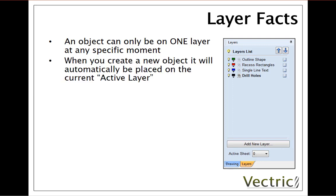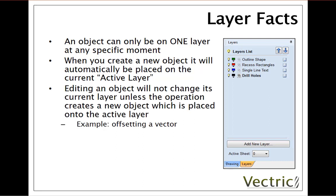When you create a new object it will automatically be placed on the current active layer. And when editing an object it will not change its layer unless the operation creates a new object which is placed onto the active layer. For instance if we have an object selected on a non-active layer and decide to offset that vector, thereby creating a new copy, that new copy will be placed onto the active layer and not the original.